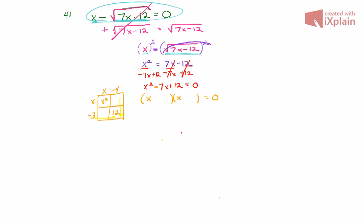And negative 4 times x gives me negative 4x. And negative 3 times x gives me negative 3x. If I were to add these two values together, I get negative 7x, which matches the middle term of my quadratic here.